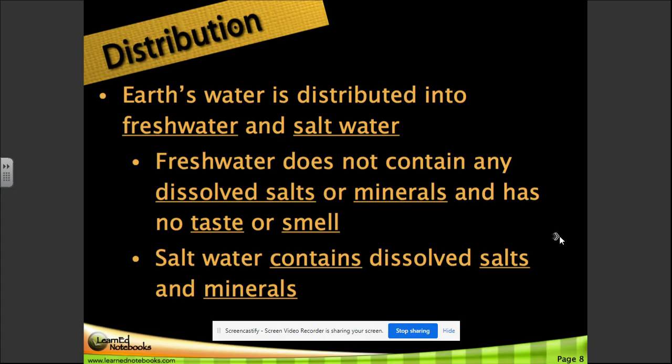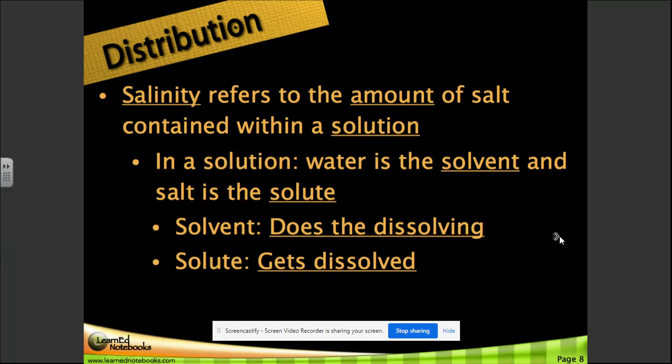Distribution on page eight. Earth's water is distributed into fresh water and salt water. Fresh water does not contain any dissolved salts or minerals and has no taste or smell. Salt water contains dissolved salts and minerals. Salinity refers to the amount of salt contained within a solution. In a solution, water is the solvent and salt is the solute. Solvent does the dissolving, solute gets dissolved.